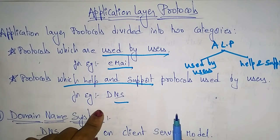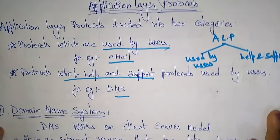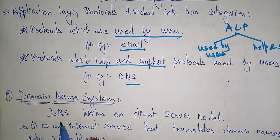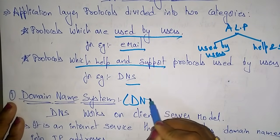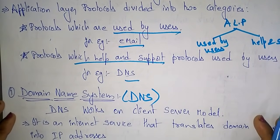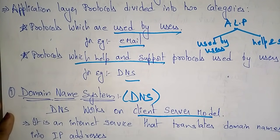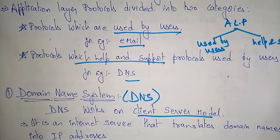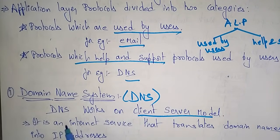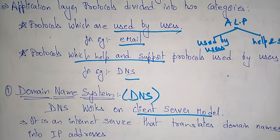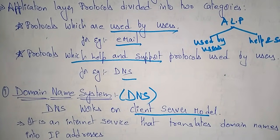Let's take the first one: Domain Name System, DNS. The domain name system works on the client-server model. It is an internet service that translates domain names into IP addresses.